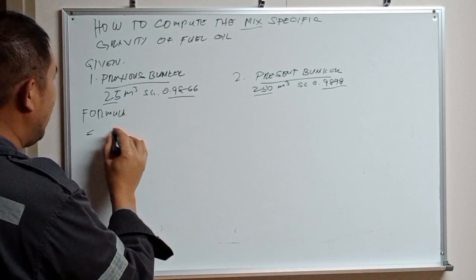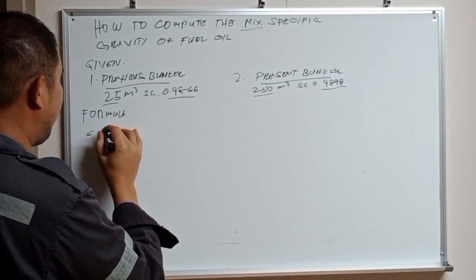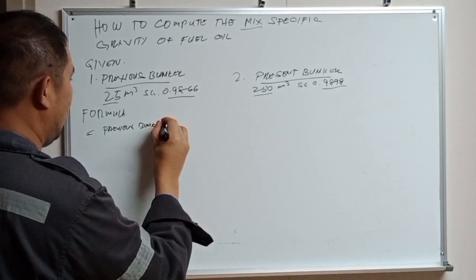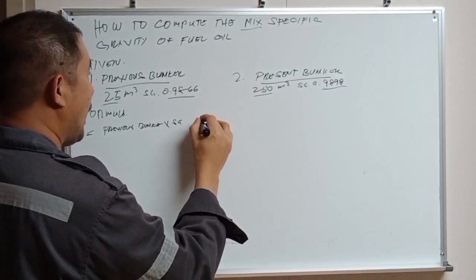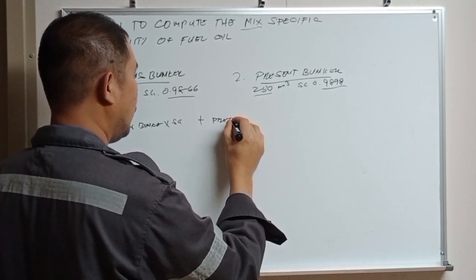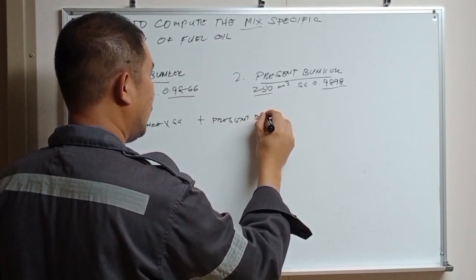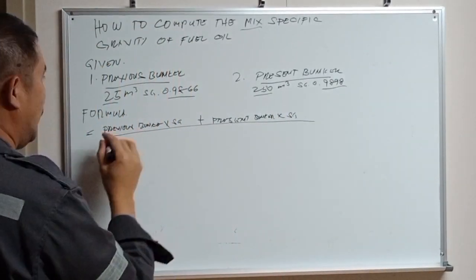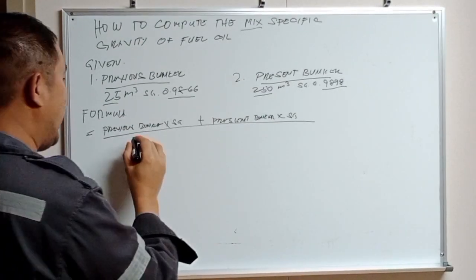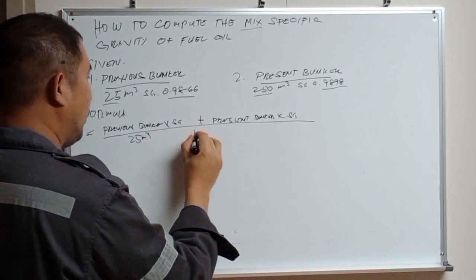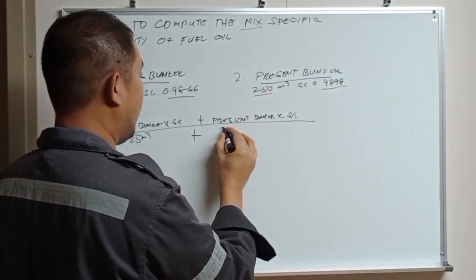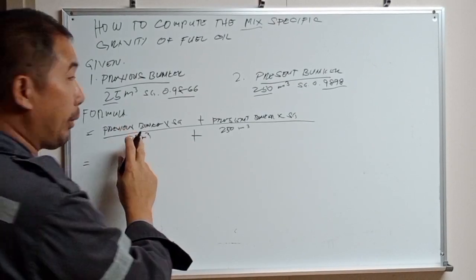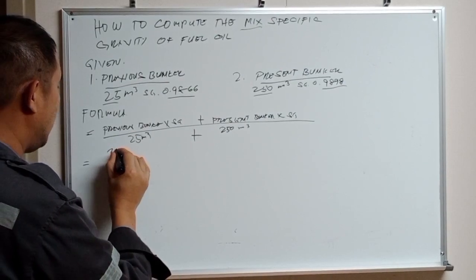Now, the formula for mixed specific gravity computation is: the remaining previous bunker of 25 cubic meters times its specific gravity, plus the present bunker quantity times its specific gravity, divided by the previous bunker 25 cubic meters plus the supply of 150 cubic meters.